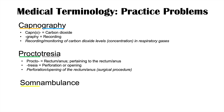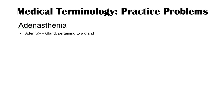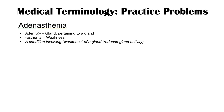The next word is somnambulance. Som refers to sleep — you can think of somnolence, where you're very tired and sleepy. Ambul or ambulance refers to walking. So somnambulance is a condition of sleepwalking. The next word is adenasthenia. Adene — like adeno or adenoid — means gland or pertaining to a gland. The suffix asthenia, as in myasthenia gravis, means weakness. So adenasthenia means weakness of a gland — really reduced activity or functionality of a gland.